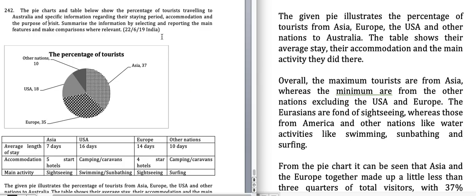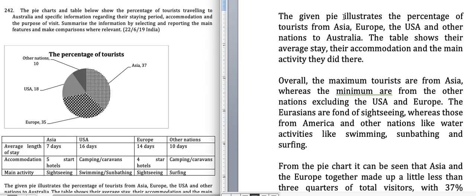You can see that no time is given in this graph, so this has to be written in the present tense. The introduction reads: 'The given pie chart illustrates the percentage of tourists from Asia, Europe, the USA and other nations to Australia. The table shows their average stay, their accommodation and the main activity they did there.'